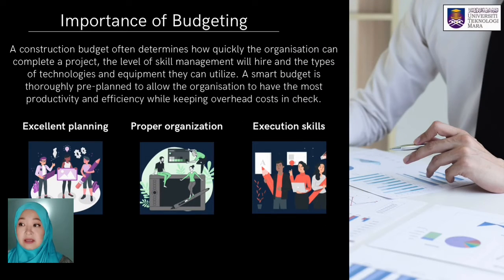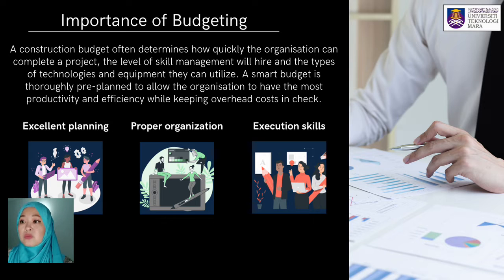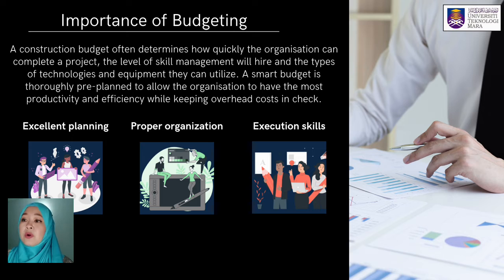A construction budget often determines how quickly an organisation can complete a project, the level of scale management, and the types of technologies and equipment they can utilize. A smart budget is truly pre-planned to allow the organisation to have the most productivity and efficiency while keeping overhead costs in check. There are three important elements: excellent planning, proper organisation, and execution at scale.